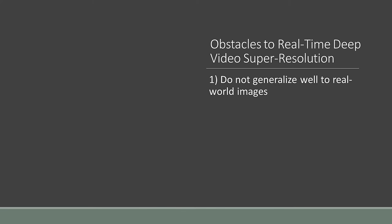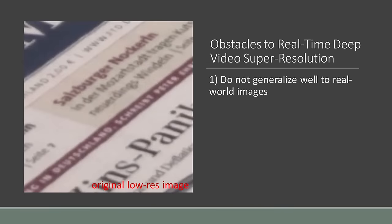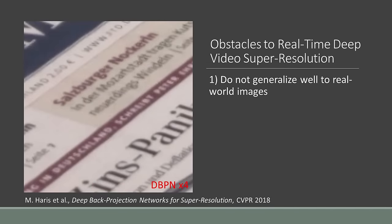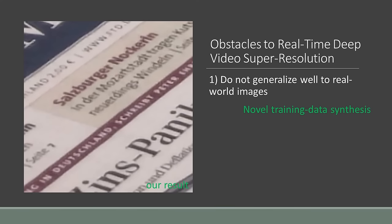First, deep learning super-resolution methods do not generalize well to real-world images. For example, given an arbitrary input, a state-of-the-art method produces an output that is not sharper than naive bicubic upscaling. Our result is substantially sharper. We achieve this with a novel procedure for synthesizing image pairs for training the model.